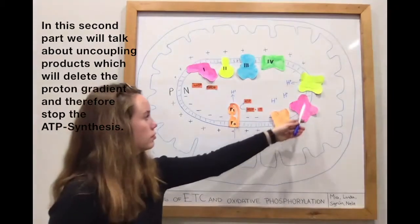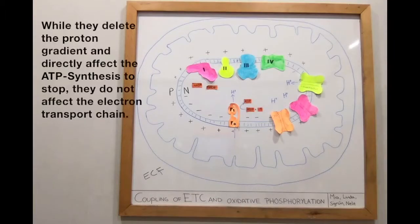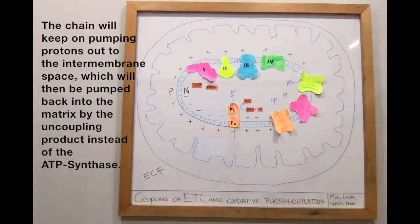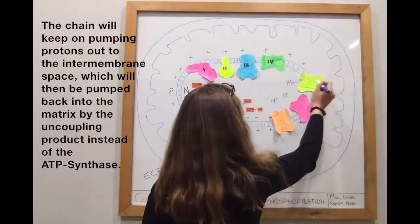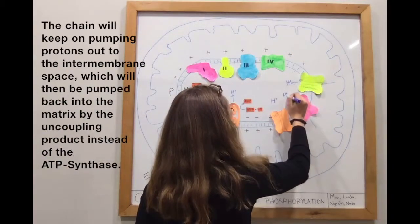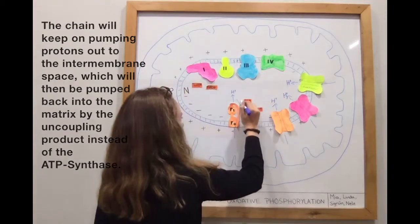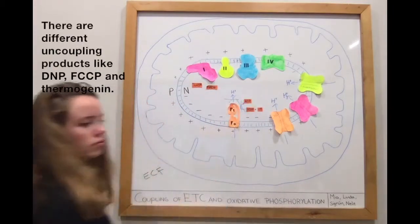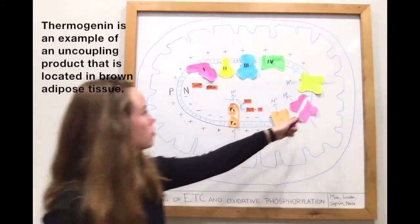While they delete the proton gradient and directly affect the ATP synthesis to stop, they do not affect the electron transport chain. The chain will keep on pumping protons out into the intermembrane space, which will then be pumped back into the matrix by the uncoupling products instead of the ATP synthase. There are different uncoupling products like DNP, FCCP, and thermogenin.